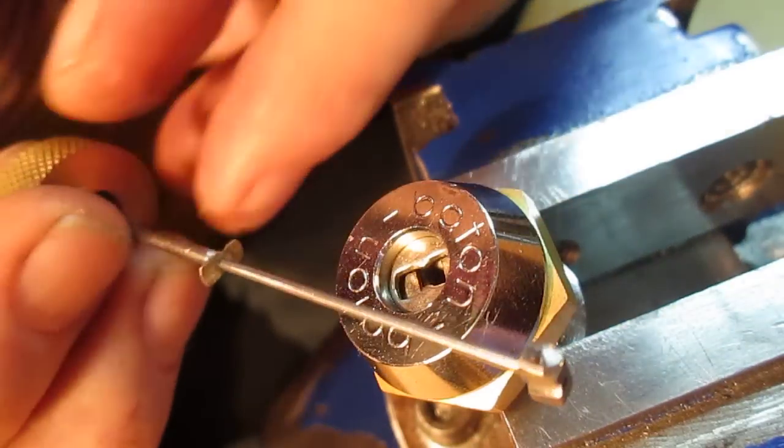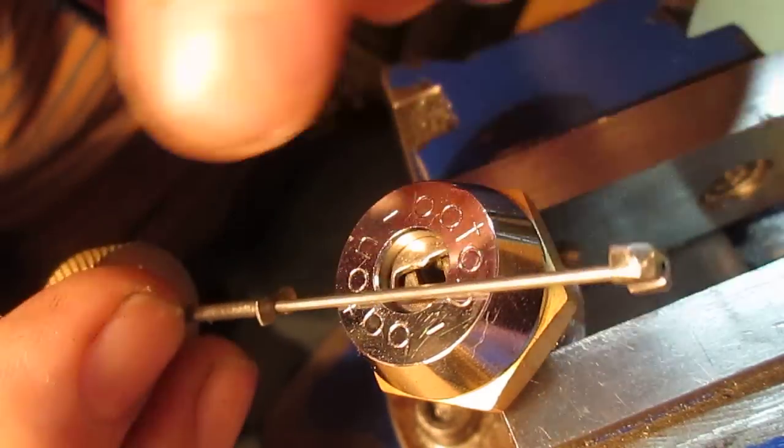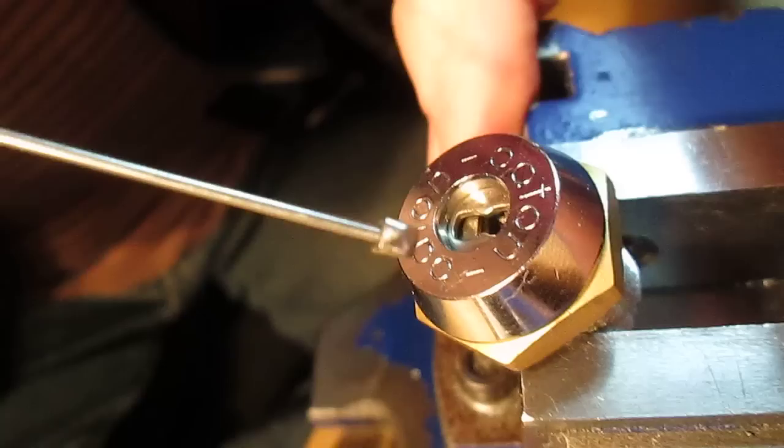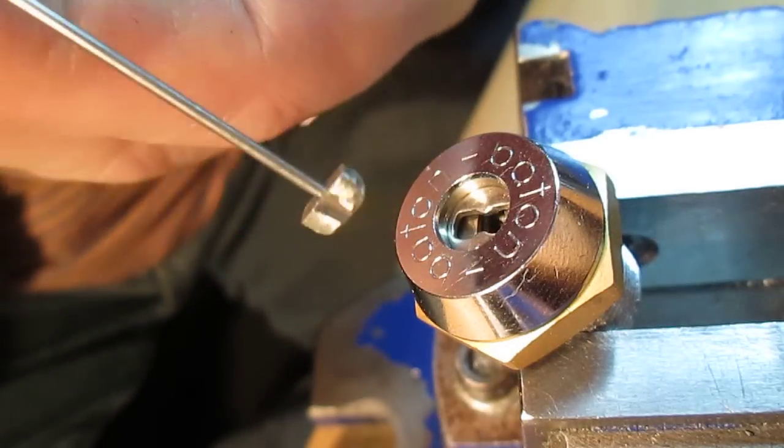So here's my tool. It's rear tensioning, it's got the profile cut out of the picking head and the tensioner, and let's try and get this lock picked.